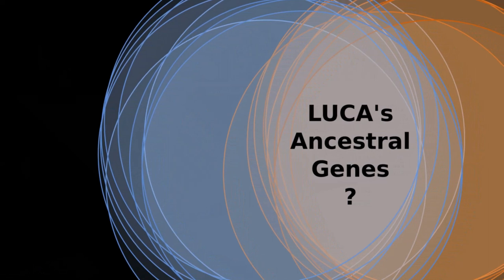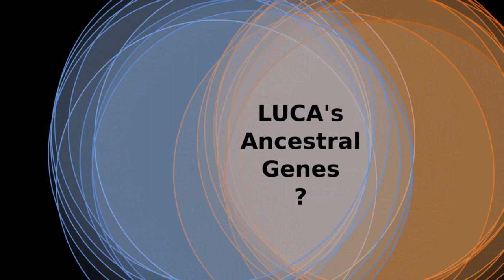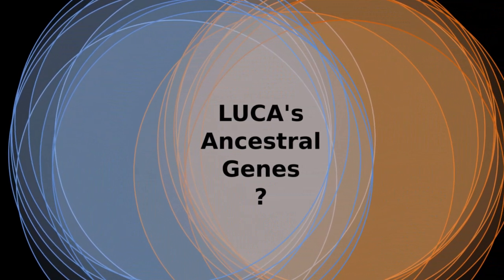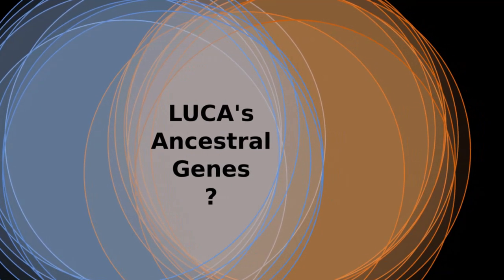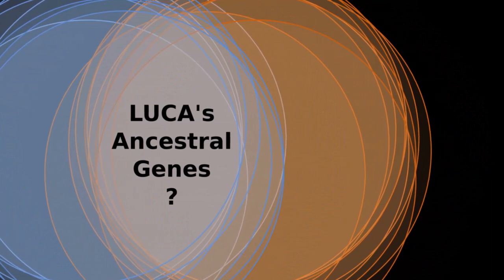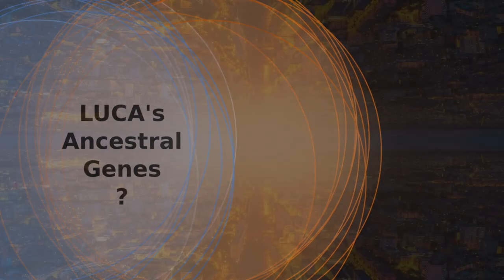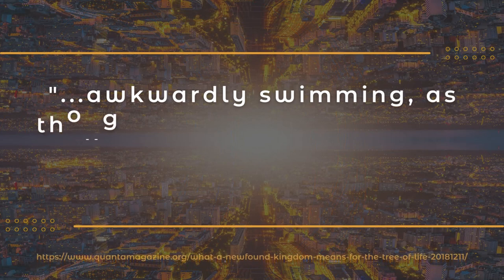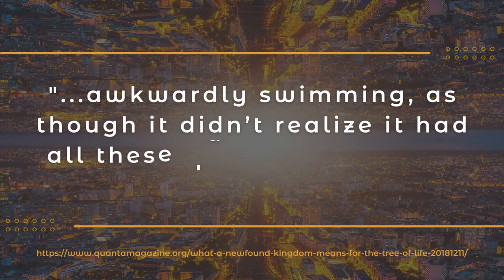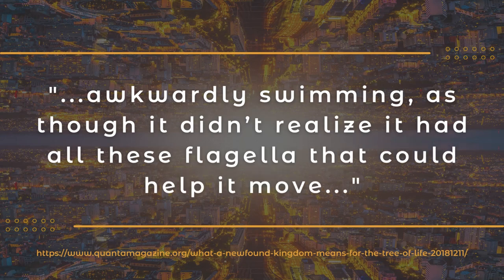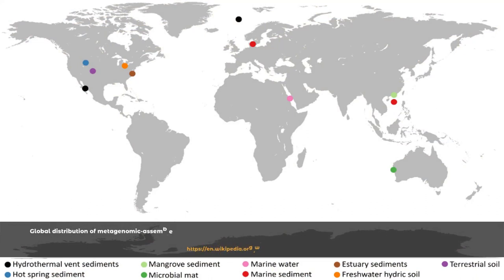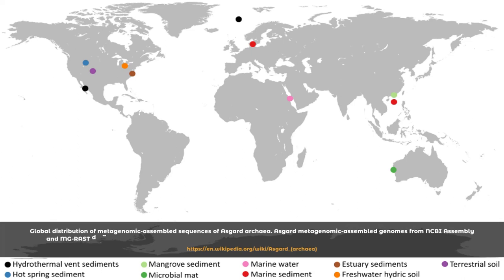Back in the lab, Eglit soaked her sample in water and over the next month she periodically peeked at it through a microscope for signs of unusual life. Late one evening, something odd in the sample caught her eye. An elongated cell radiating whip-like flagella was, quote, awkwardly swimming as though it didn't realize it had all these flagella that could help it move, unquote. Under a more powerful scope, she saw it fit the description of a hemimastigote, a rare kind of protist that was notoriously hard to cultivate. The next morning, the lab was abuzz with excitement. We dropped everything, she recalled.